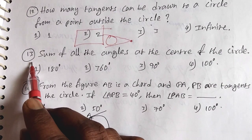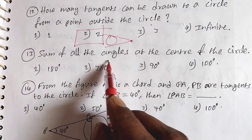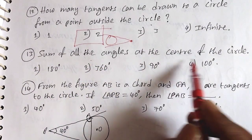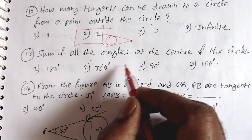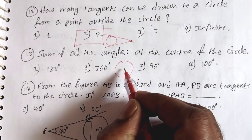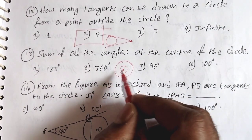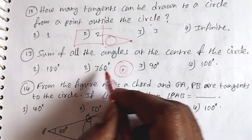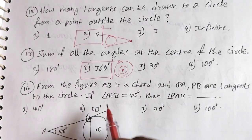Question 13: The sum of all angles at the center of the circle. The center of the circle has angles summing to 360 degrees. So the second option, 360 degrees, is the answer.